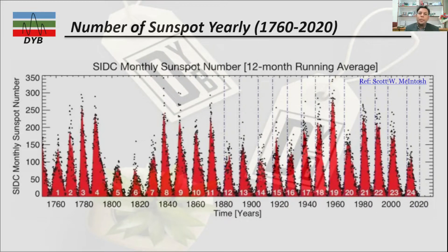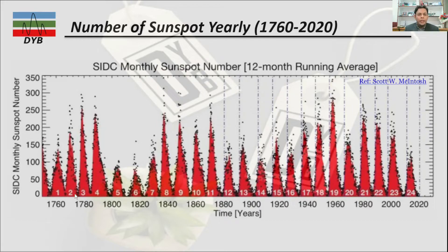Now we will look at the number of sunspot activities yearly. The data shown is from 1760 to 2022. On the y-axis we have the monthly sunspot numbers and on the x-axis we have the time in years. You can observe that after a certain time there is a peak of sunspot activity, then it goes down, then up again. If you calculate, it takes almost 10 to 11 years to complete a cycle.